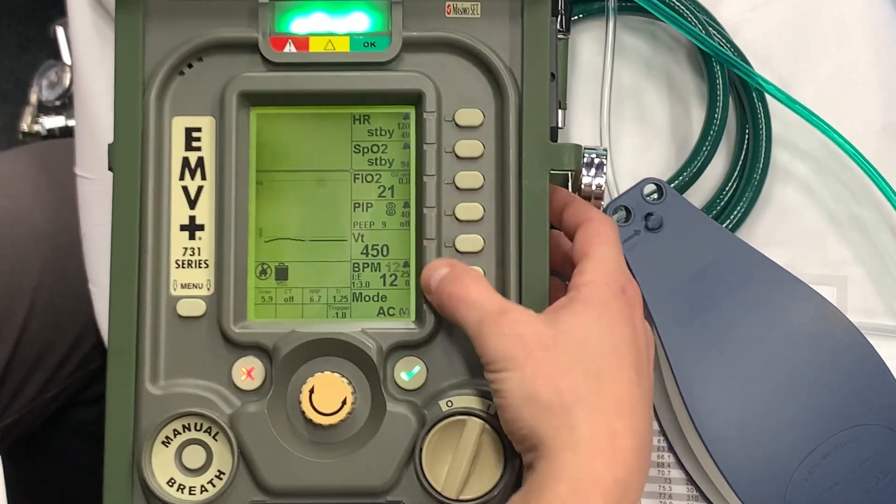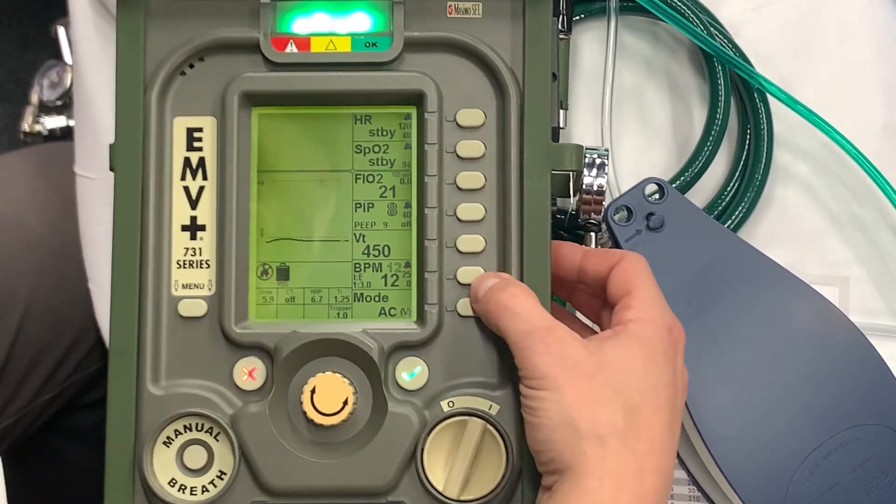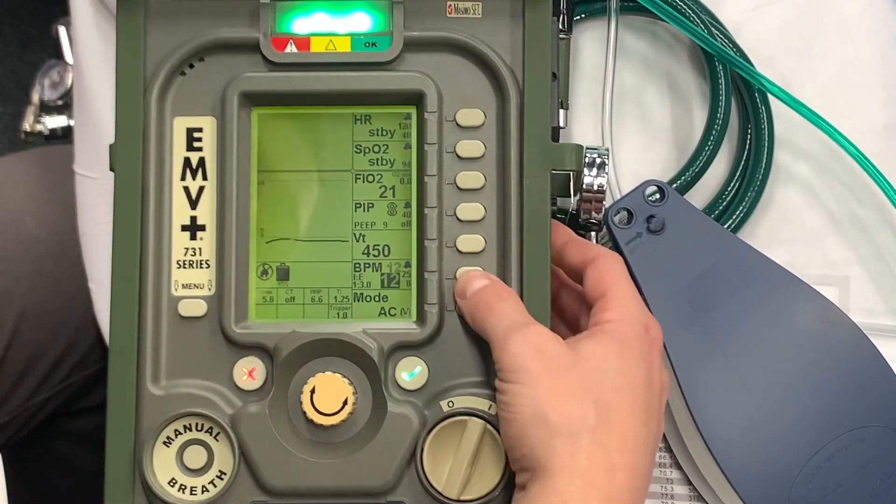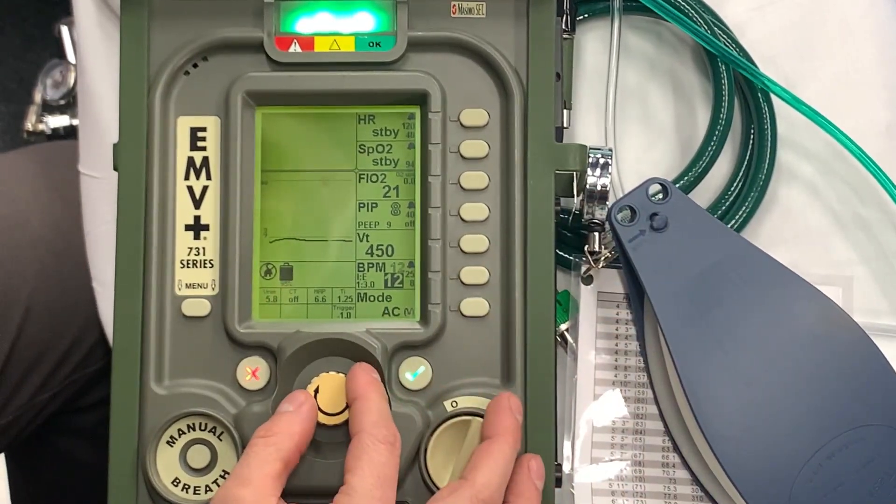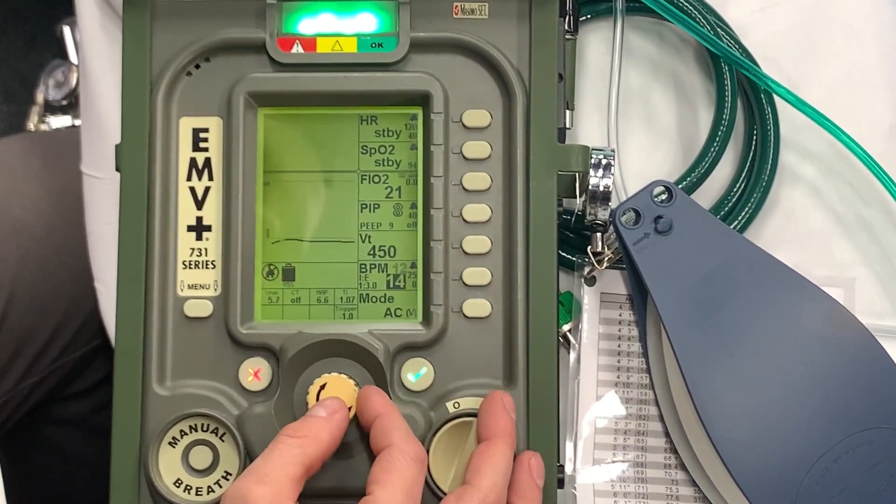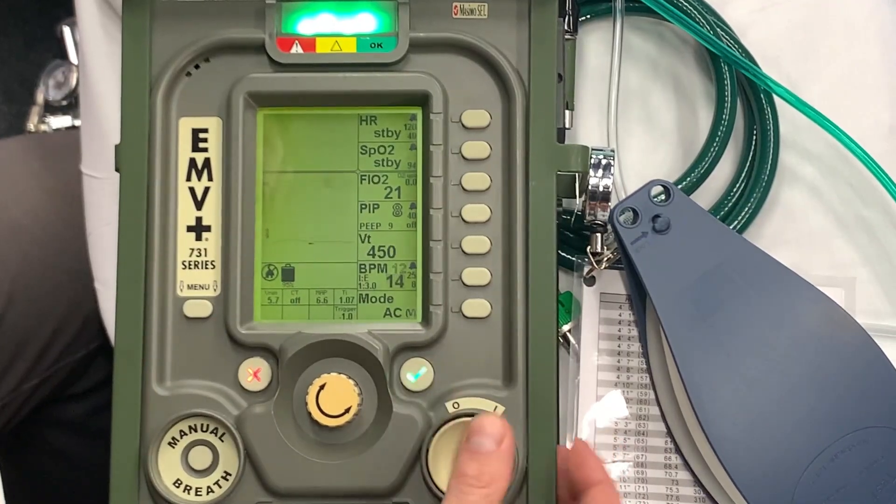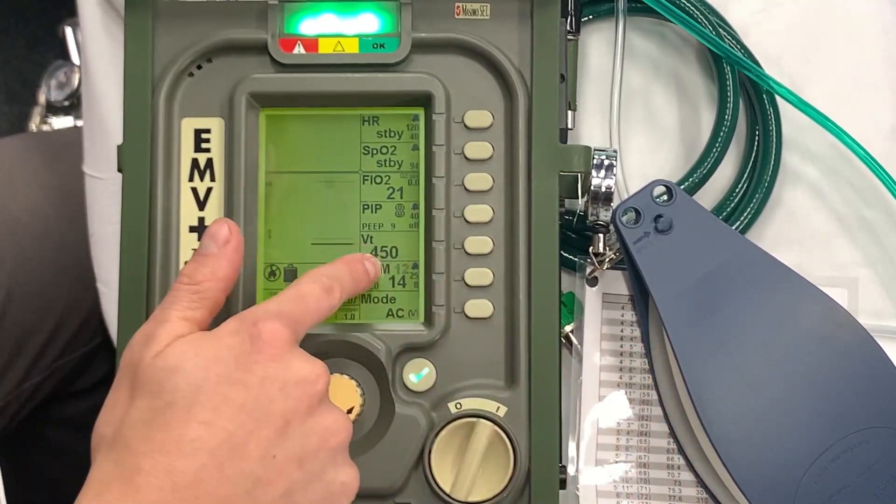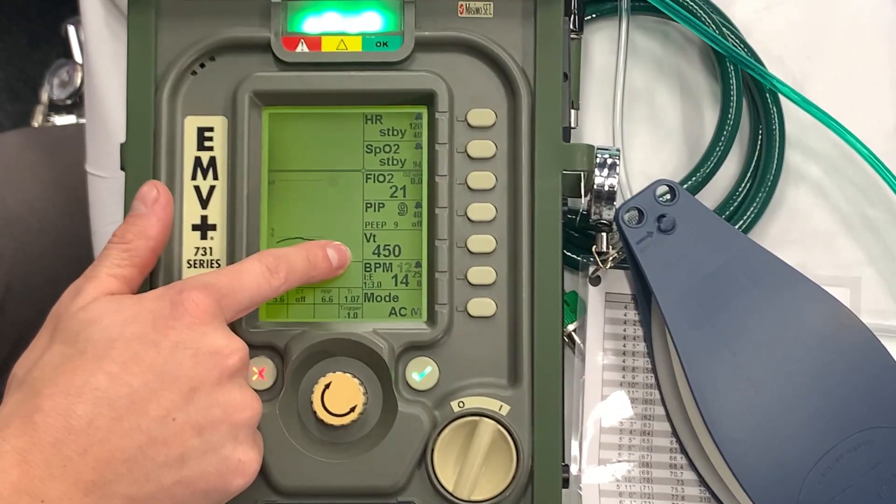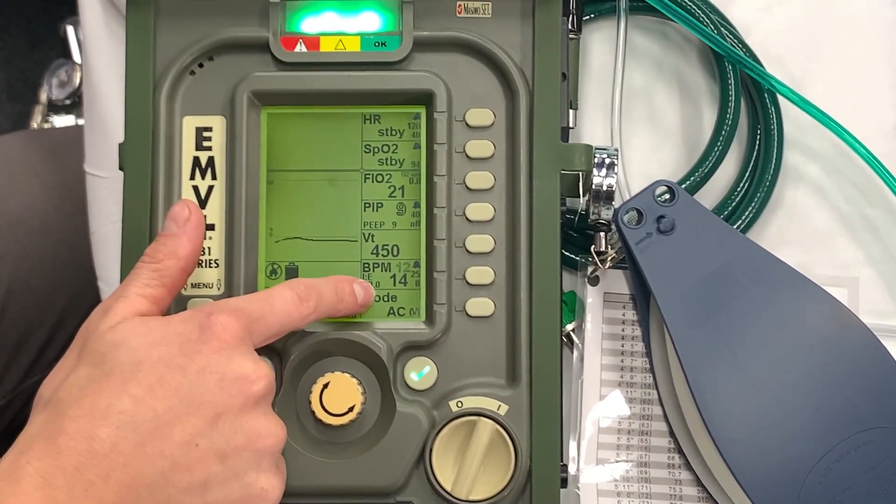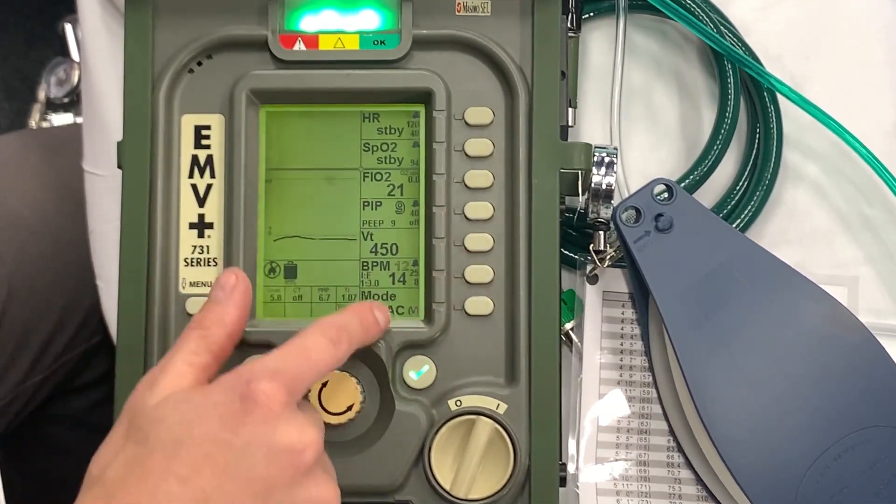At that point, what I like to do is come down to my respiratory rate. So soft key over to the right here, and I'm going to set a respiratory rate. Let's just go to 14. I have to confirm that. So now we have decreased our tidal volume from 500 down to 450 and increased our respiratory rate from 12 to 14.